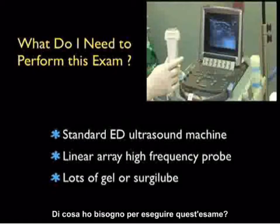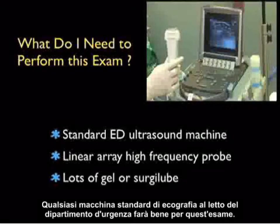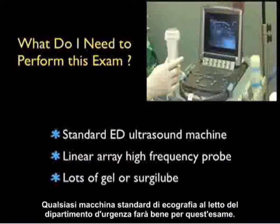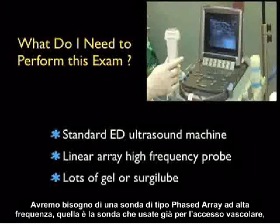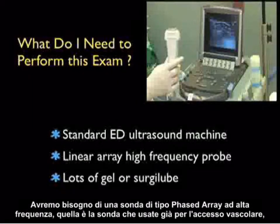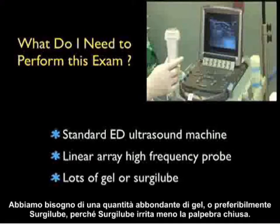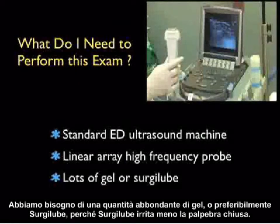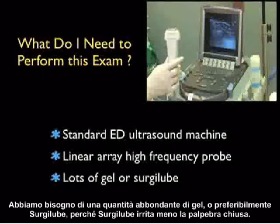What do you need to perform this examination? Any standard emergency department bedside ultrasound machine will work well. We'll need the high-frequency linear array type probe — the same probe already used for vascular access — which we'll be using for ocular ultrasound. We'll also need lots of gel, or preferably surgery lube, as surgery lube is less irritating to the closed eyelid.